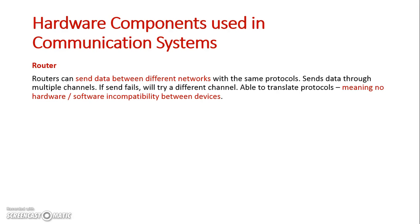A router can send data to specific nodes on another network, as long as they're using the same protocol. It has multiple channels just like the switch, but it can also send data to other networks. Let's look at our router.